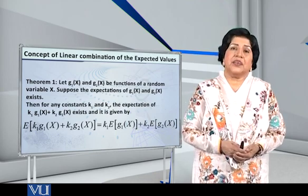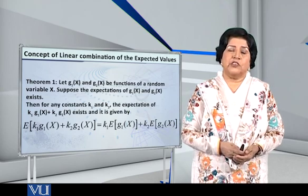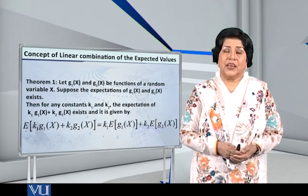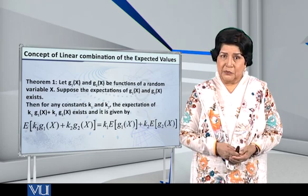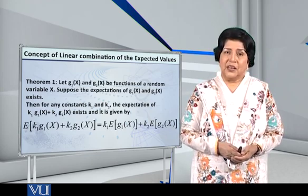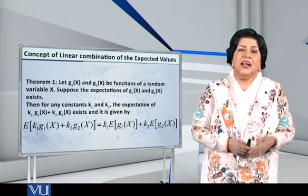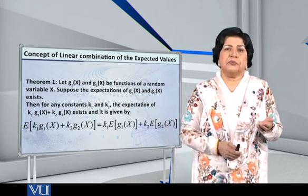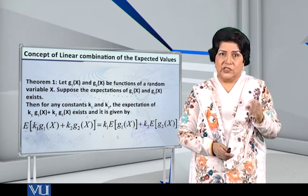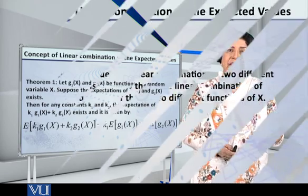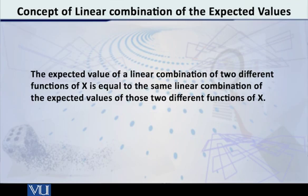What is the equation? The expected value of k1 into g1(x) plus k2 into g2(x) is equal to k1 times the expected value of g1(x) plus k2 times the expected value of g2(x). This concept of linear combination shows that the expected value of a linear combination of two different functions of x is equal to the same linear combination of the expected values of those two different functions of x.